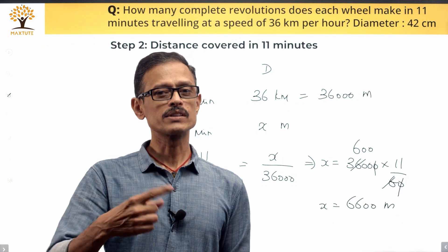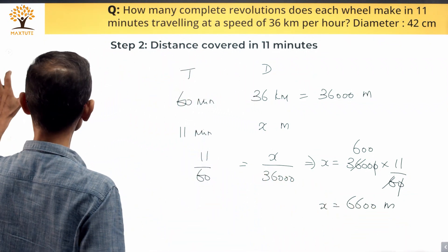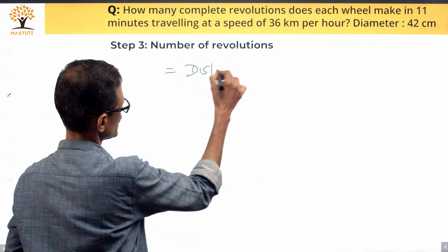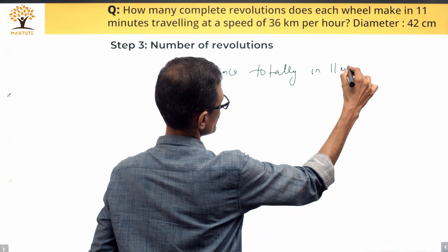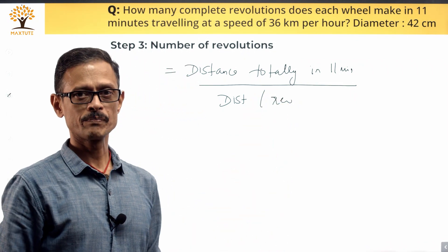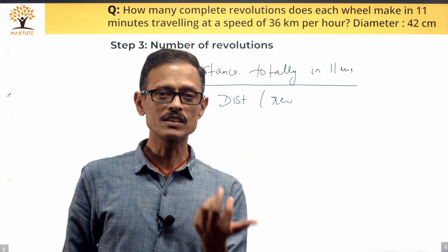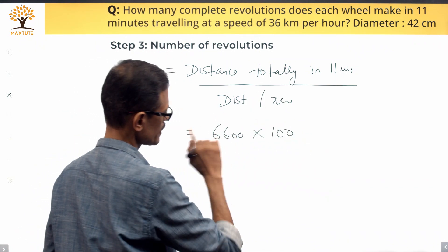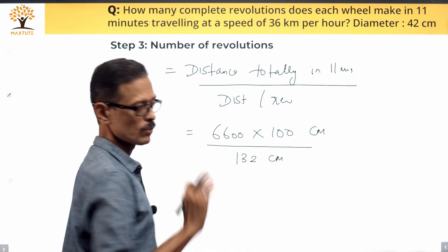Step 3: find the number of revolutions. We know the total distance covered in 11 minutes, and we know the distance covered in one revolution. Number of revolutions equals total distance in 11 minutes divided by distance per revolution. We need to convert units — I'll convert the 6,600 meters to centimeters: 6,600 times 100 centimeters, divided by 132 centimeters.